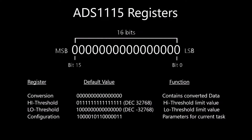Next we have the conversion register, which contains the 16-bit converted value that can range from negative 32,768 to positive 32,768. Bit 15 determines if the value is negative or positive. Although the register can store a negative number, the ADC can only sample positive voltages.